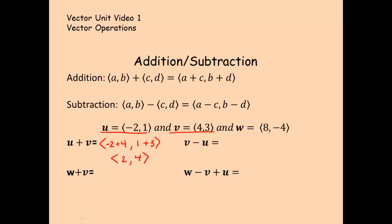For v minus u, again I'm sticking with those two. I'm going to have to make sure I do this in the correct order. So it is four minus negative two, comma, three minus one. So this vector is six comma two. That is the resulting vector.